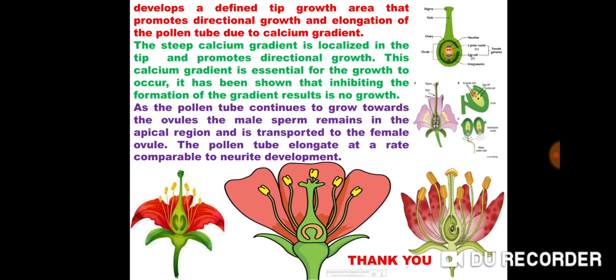It has been shown that inhibiting the formation of the gradient results in no growth. As the pollen tube continues to grow towards the ovules, the male sperm remains in the apical region and is transported to the female ovule.